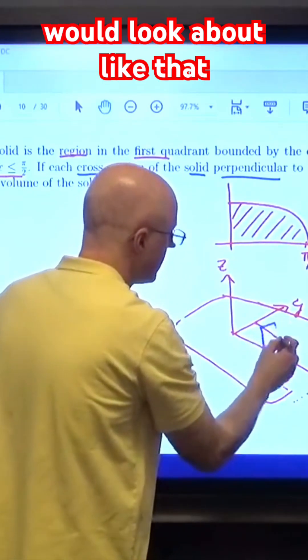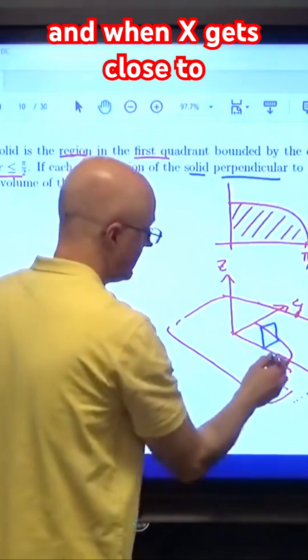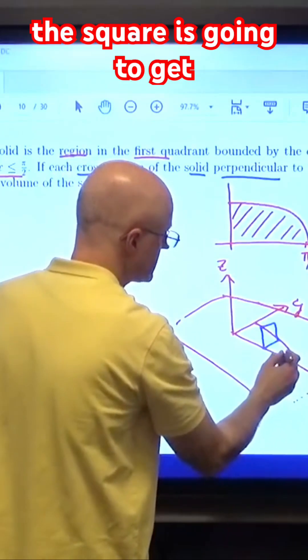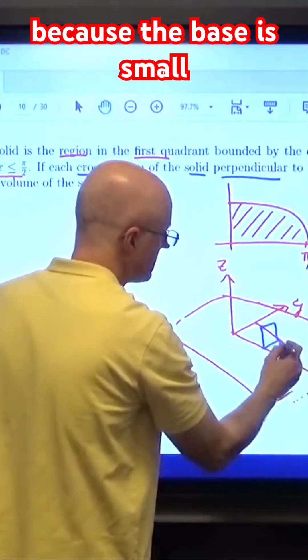The square itself, then, would look about like that. And when x gets close to pi over 2, the square is going to get smaller because the base is smaller.